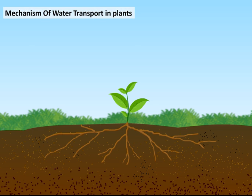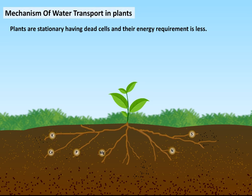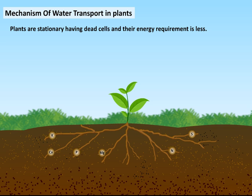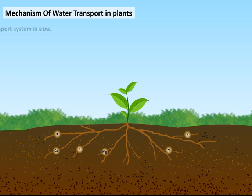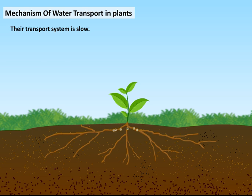Mechanism of Water Transport in Plants. Plants are stationary, having dead cells, and their energy requirement is less. Their transport system is slow.